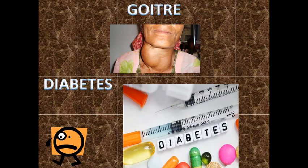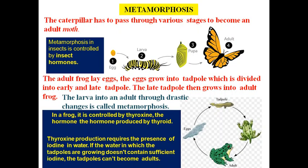The second disease is diabetes, commonly known as sugar. An increase in the level of sugar in the blood is known as diabetes, and it is controlled by the insulin hormone secreted by the pancreas, which is an endocrine gland.